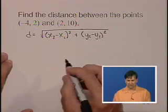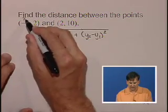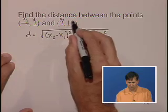It doesn't matter which one is x1, y1 and which one is x2, y2, so I'll let this one be x1, y1 and this one be x2, y2.